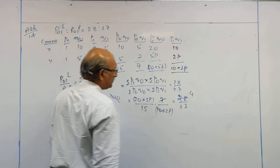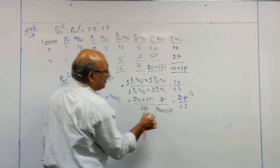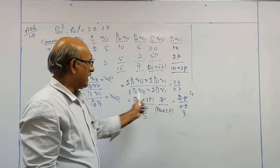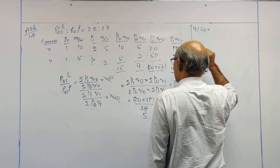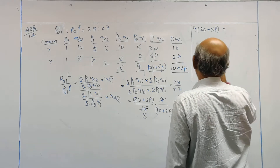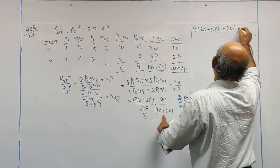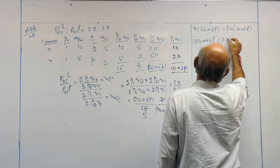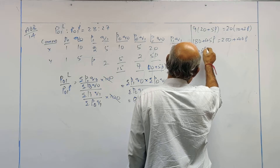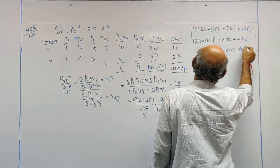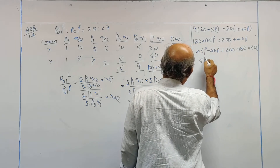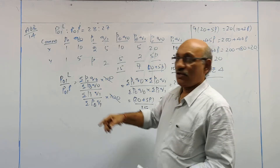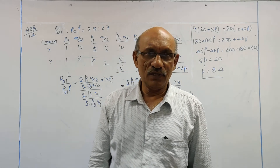Cross multiplying and simplifying: 27 × 7 × (20 + 5P) = 28 × 15 × (10 + 2P). This gives 9 × (20 + 5P) = 5 × 4 × (10 + 2P), which is 180 + 45P = 200 + 40P. Therefore 45P − 40P = 200 − 180, so 5P = 20, and P = 4. The price of the second commodity in the current year is Rs. 4.